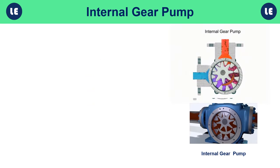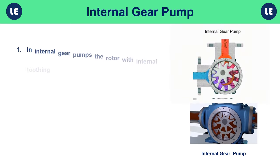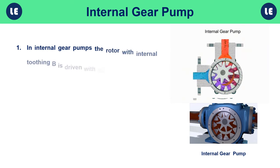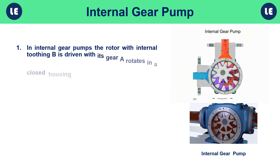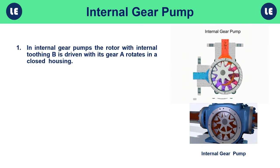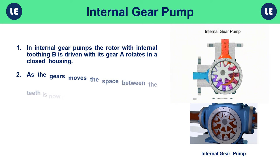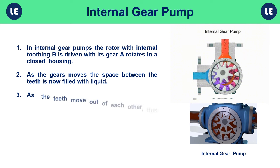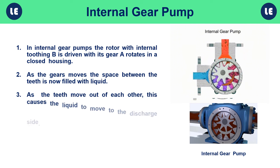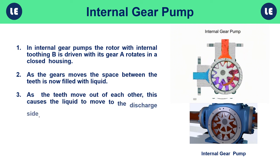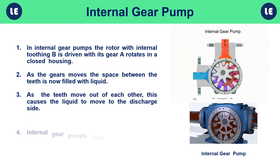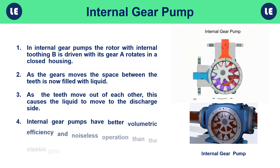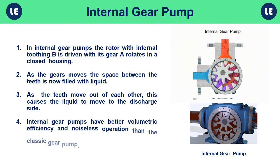In an internal gear pump, the rotor with internal toothing is driven and rotates in a closed housing. As the gears move, the space between the teeth fills with liquid. As the teeth move out of mesh, this causes the liquid to move to the discharge side. Internal gear pumps have better volumetric efficiency and noiseless operation compared to the classic gear pump.